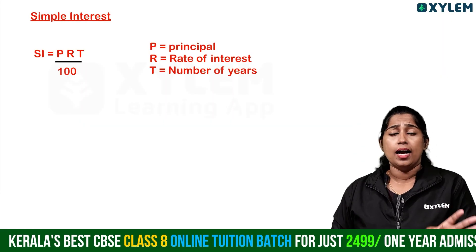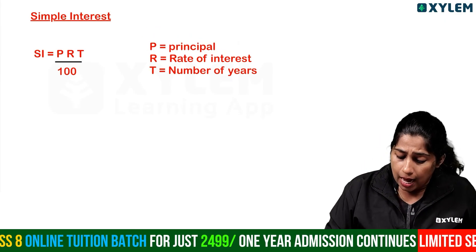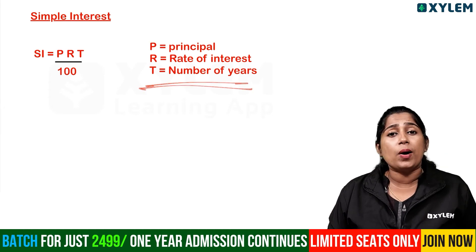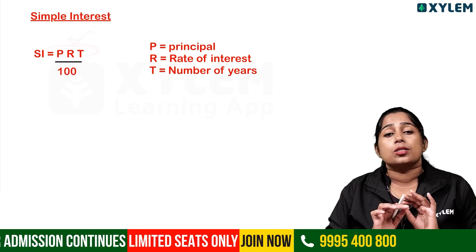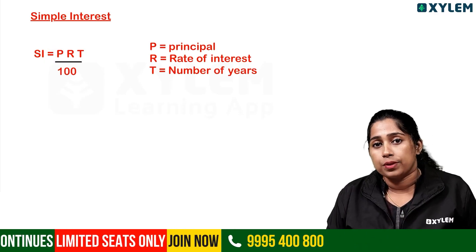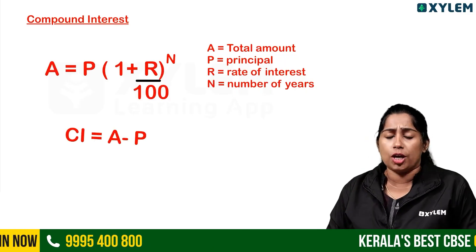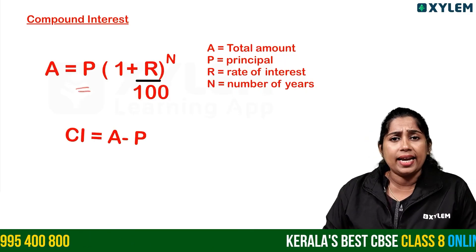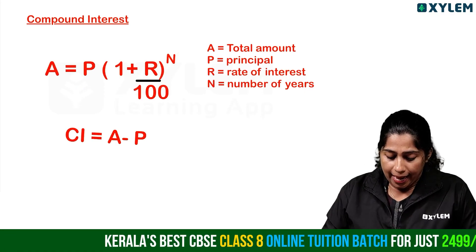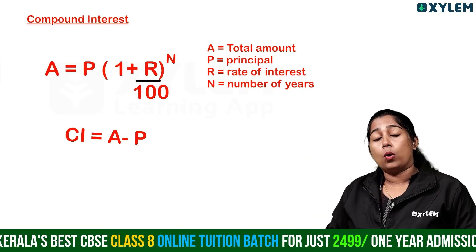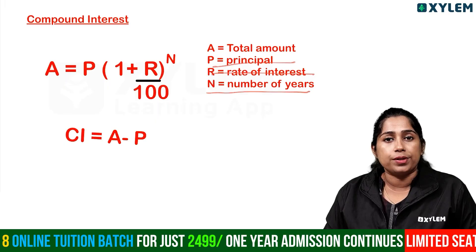The simple interest formula is PRT divided by 100, where P is the principal, R is the rate of interest, and T is the number of years. These are the same values you substitute to solve the problem. The compound interest formula is A equals P into (1 plus R by 100) whole to the power N, where A is the total amount.